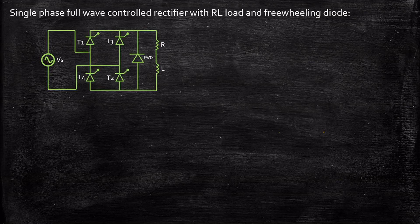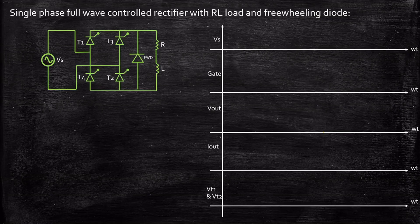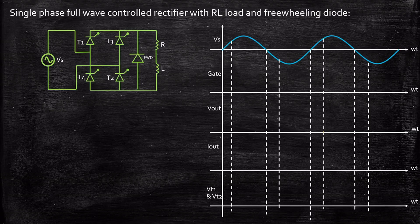This is the circuit diagram. In order to understand the operation of the circuit let us consider the waveforms. We are going to consider a sinusoidal voltage source. We will be applying suitable amount of gate pulse and we are going to look at the output voltage waveform, the output current waveform and the voltage across thyristor T1 and T2 respectively.